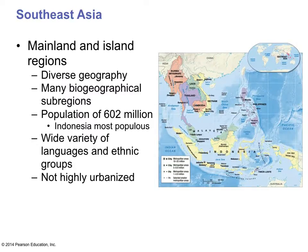Southeast Asia is made up of many countries in the mainland and island region. Starting at the top left on the map, you have Burma or Myanmar as it's called today, Thailand, Laos, Cambodia, Vietnam, Malaysia, Indonesia, then the small country of Brunei on the island of Borneo right next to Malaysia, and then you have the Philippines. So you have a number of countries that occupy this mainland and island area.